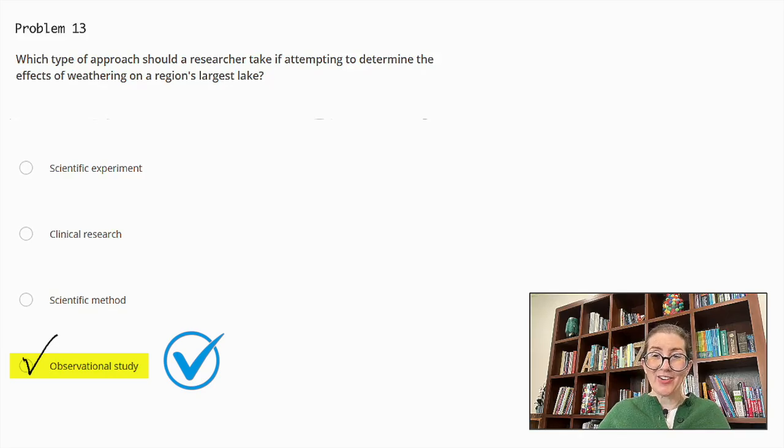Why are the other answers incorrect? Scientific experiment involves manipulating variables in a controlled environment, which would be impractical in this case. Clinical research is used for medical studies on human subjects, so it's not relevant here at all. Scientific method is an overall process of scientific inquiry and not a specific type of study. Therefore, an observational study is indeed the most appropriate approach.